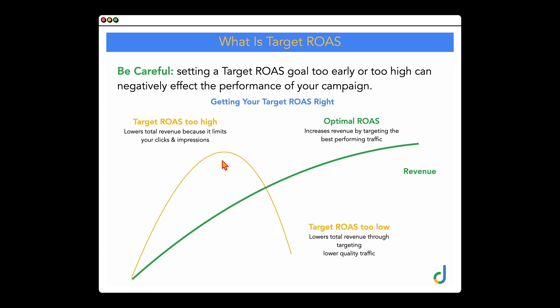Say you wanted to achieve a target ROAS of 900%, which is a conversion value cost of 9.0. But at the moment your account is only achieving a 3.0. What would happen is Google just doesn't have enough data to know which exact search terms, audiences, demographics, time of day, or day of the week will achieve that. Because it doesn't know, it actually limits the amount of impressions, which limits the ROAS or revenue you're going to achieve.